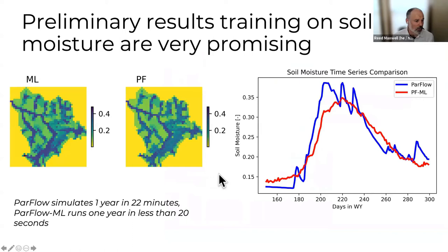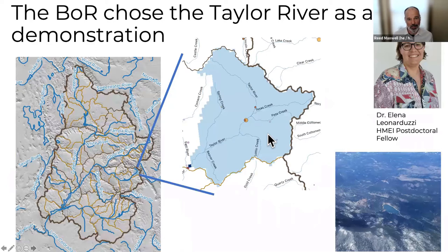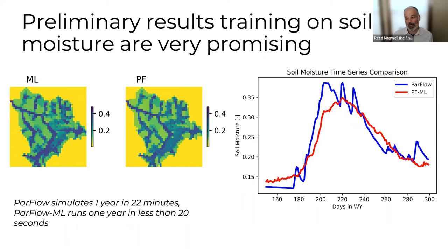We're doing many different types of simulations training our Taylor watershed machine learning emulators and comparing them to our ParFlow integrated hydrologic model simulations. Preliminary results are really promising. We've swapped to soil moisture as one of the important quantities of interest. I'm showing end-of-summer soil moisture from our machine learning emulator for the Taylor compared with our ParFlow simulation — really good agreement. At an observation location for soil moisture and snow within the watershed, we also get really good temporal behavior. Our machine learning emulator very robustly matches our ParFlow simulation. Importantly, ParFlow runs one year of the Taylor in about 22 minutes on our cluster, while the emulator runs one year in less than 20 seconds — that's revolutionary.